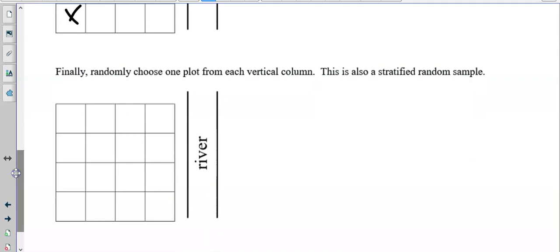Now it says finally randomly choose one plot from each vertical column. So one, two, three, four. And do your random generator again. So from each column, I got three, three, one, four. This is also a stratified random sample.